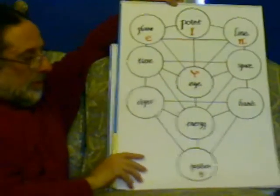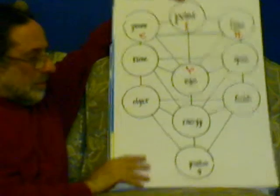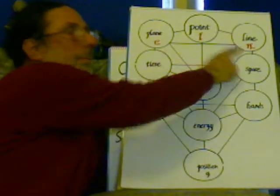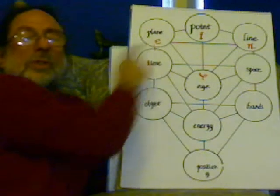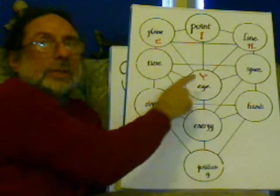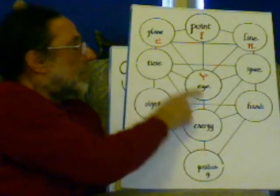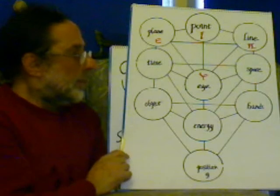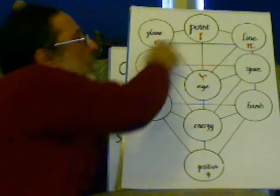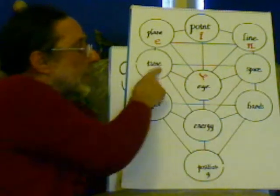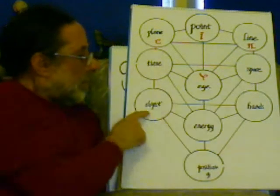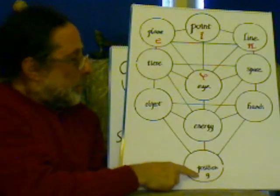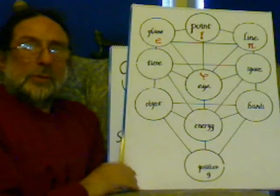So we put all three triangles together. We've got the point, the line, the plane — which is the function of E. We've got the space, the time, and the I with the phi — the golden mean — seeing harmony and proportion. There you've got the quantum level, there you've got the relativity level, and there you've got the gravity level. The hands, the object, and the position — and that's how the three triangles fit together.